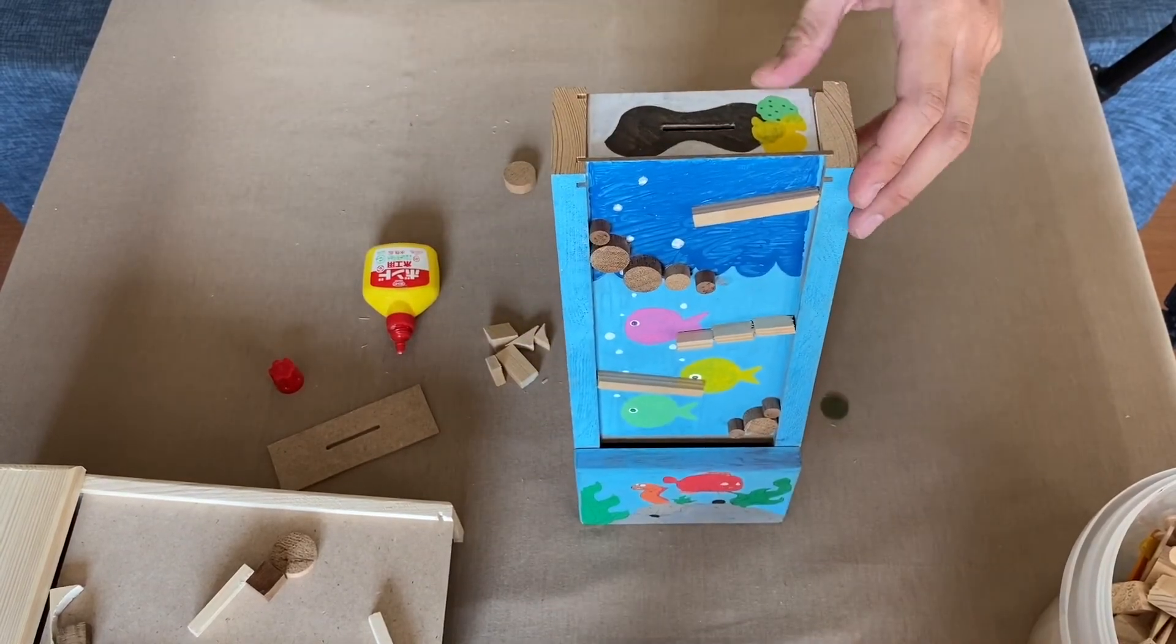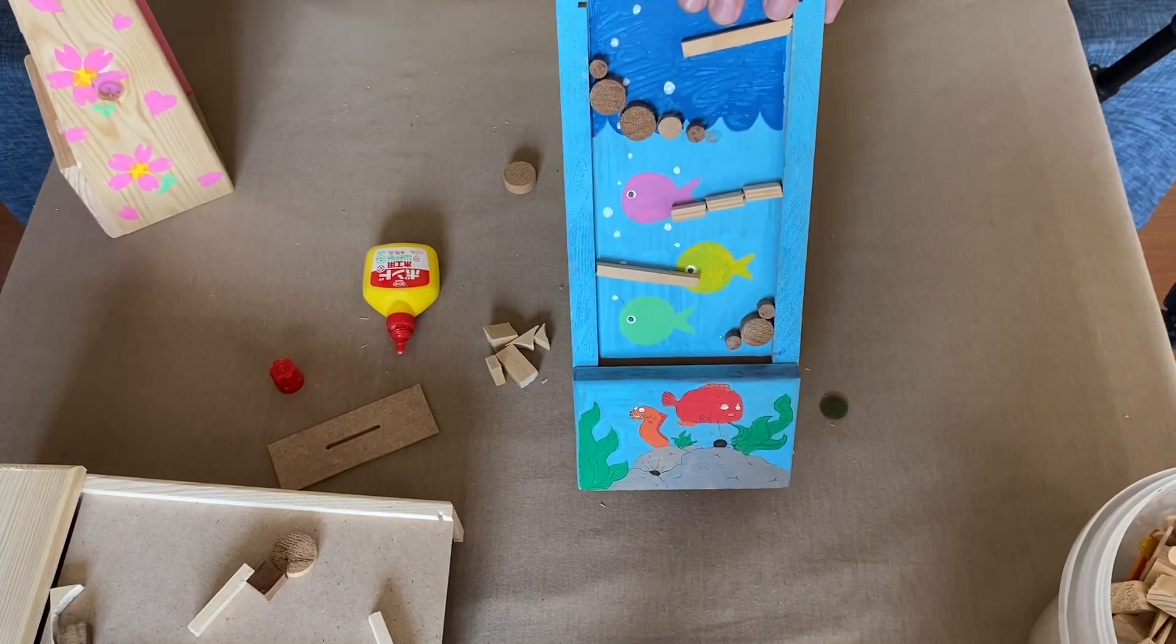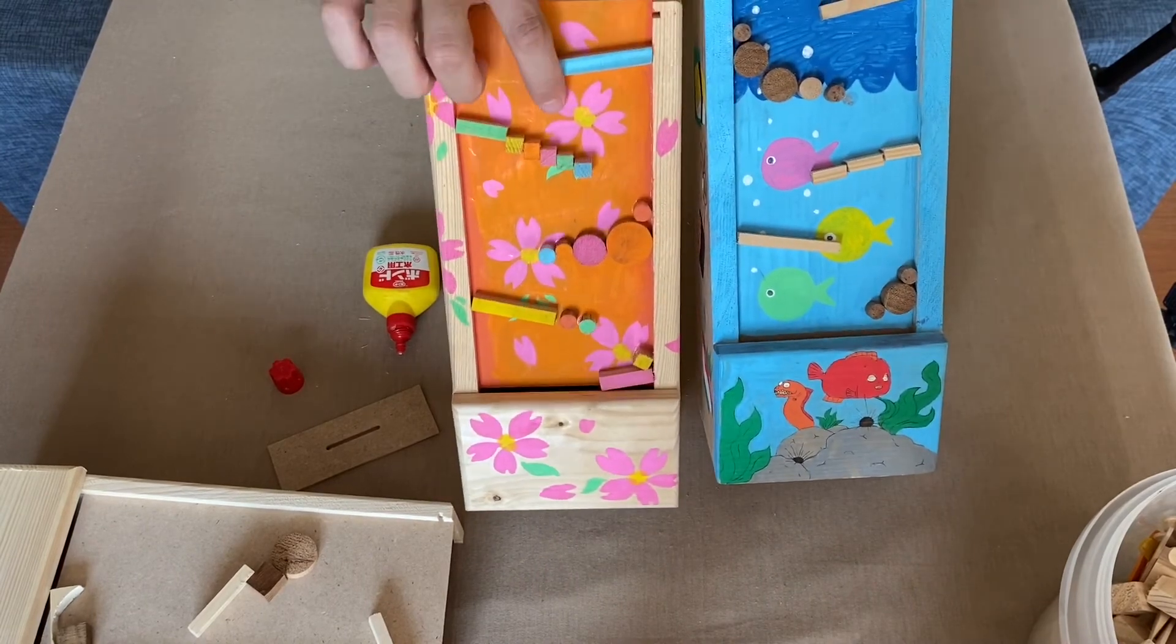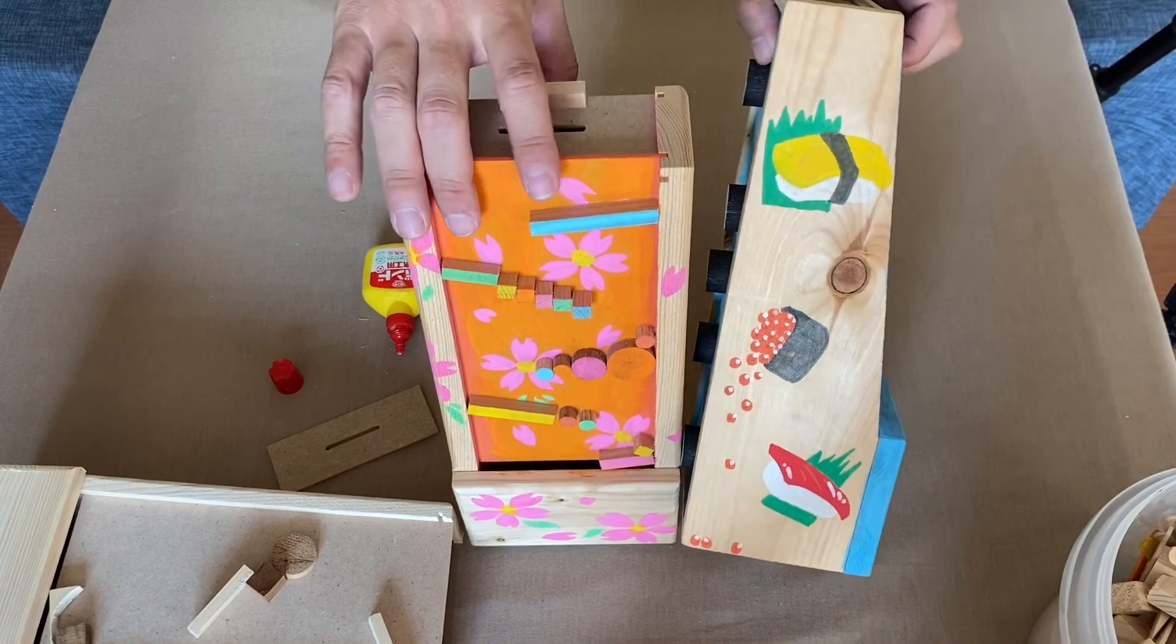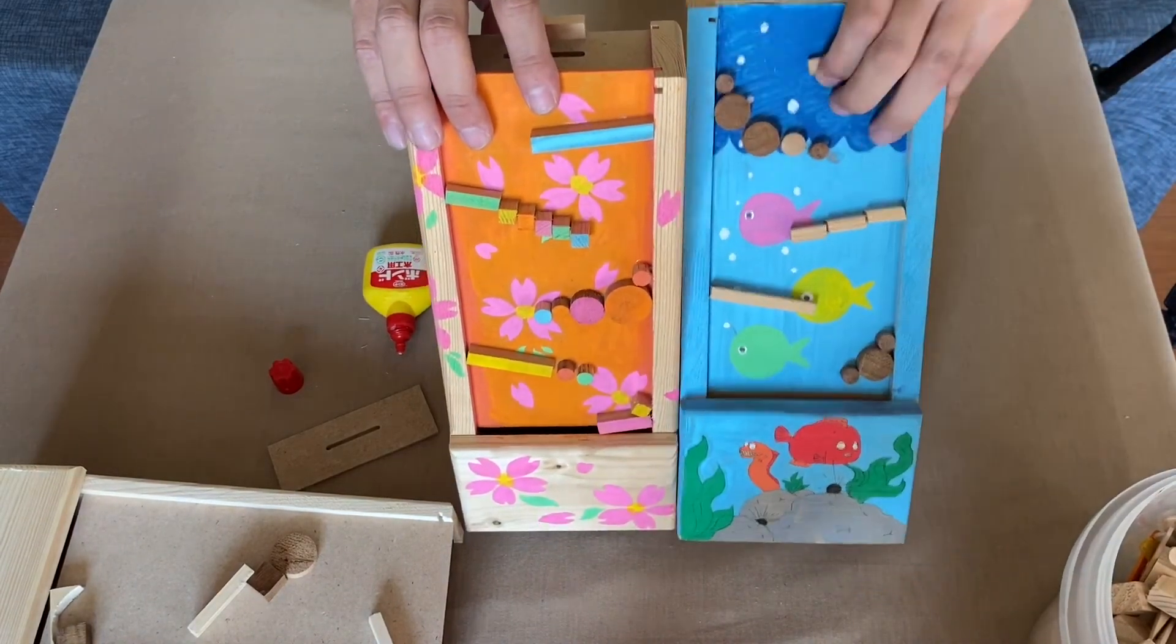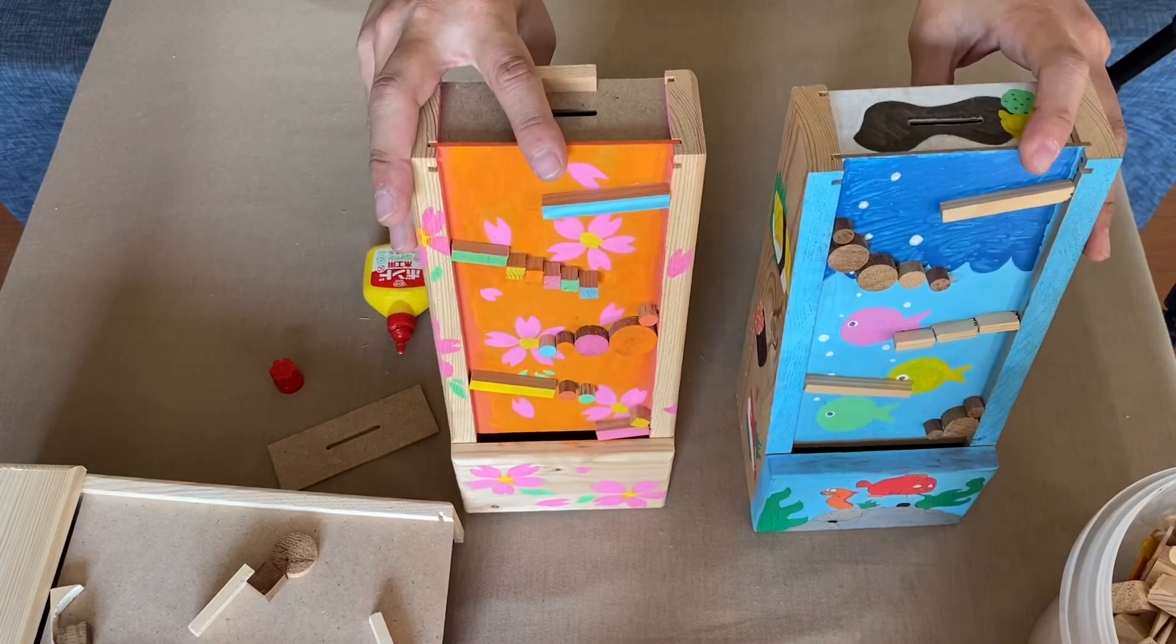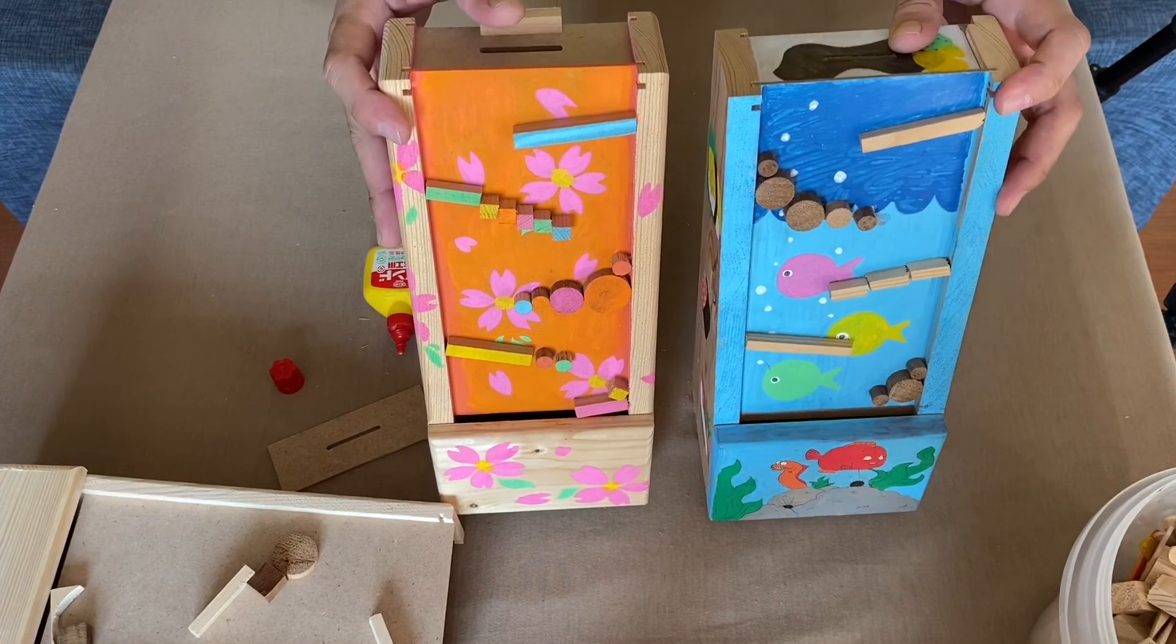So after assembling this parts, also paint different types of paint. This one, Sakura piggy bank. This one also sushi, fish sushi piggy bank. So you can enjoy this piggy bank toy. Thanks for watching.